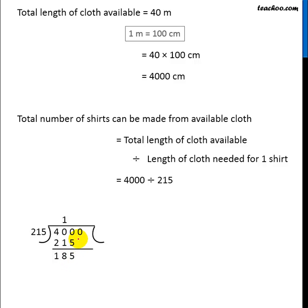Now the 0 from top will come down like this. Now we have to find that number in 215 table which is equal to or less than 1850. Now we don't know the table of 215 but we might know the table of 200, as we know the table of 2.